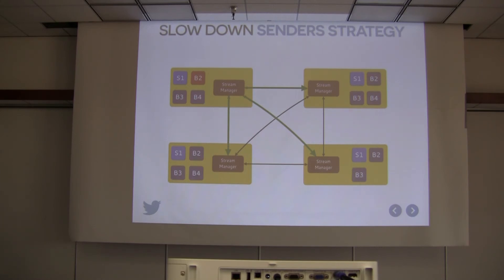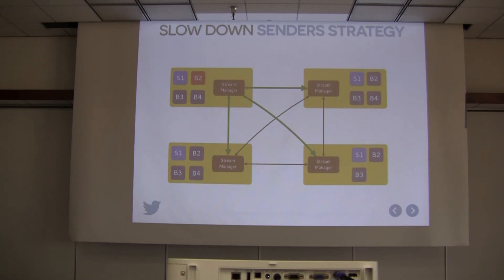Once the back pressure is relieved and B2 is absorbing data at full speed again, relief messages are sent and the spout gates open — data flows at a faster rate. This can create spiky behavior, so we use buffers in the stream manager with a low watermark and a high watermark. Below the low watermark, back pressure is relieved; above the high watermark, back pressure is initiated. This smooths out the spiky behavior.